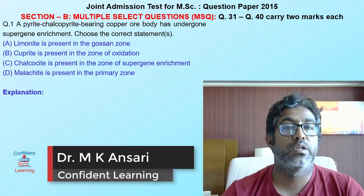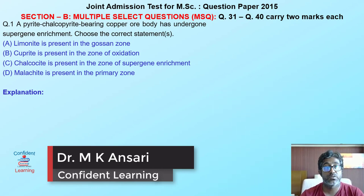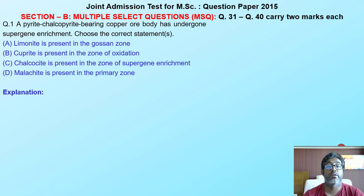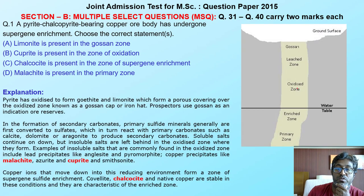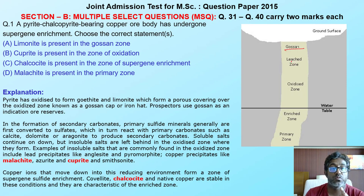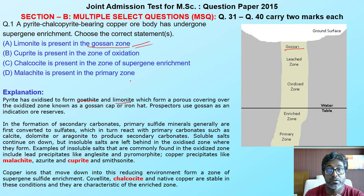This is our first question related to economic geology. A pyrite-chalcopyrite bearing copper ore body has undergone supergene enrichment. Choose the correct statement. If you know the sequence of supergene enrichment, we have a succession starting from gossan, leach zone, oxidized zone, enriched zone, and primary zone. In gossan, pyrite is oxidized to form goethite and limonite, so limonite is present in the gossan zone.